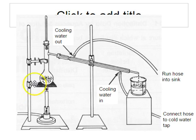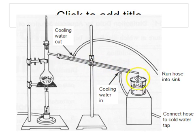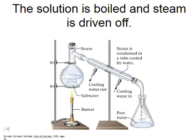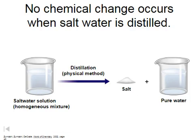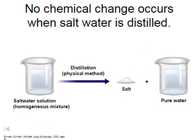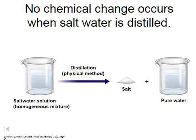Cooling water put into the distillation tube causes condensation to occur at a much faster rate, and we are left with the pure substance in the flask afterwards. The solution is boiled, the steam is driven off, and we can collect it. We'll be left with salt after boiling, and pure water will be collected. When we do distillation in class, there is no chemical change occurring — we're simply removing the solute from the solvent and should be able to get a 100% separation of the materials.